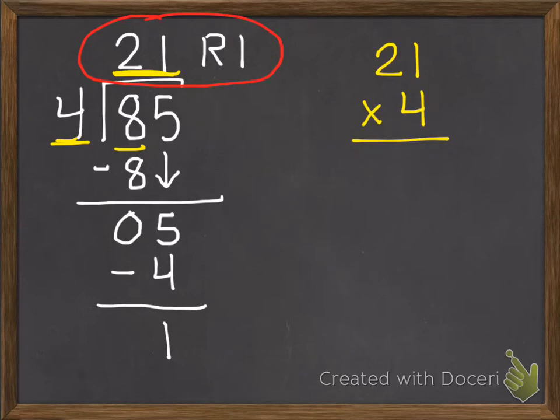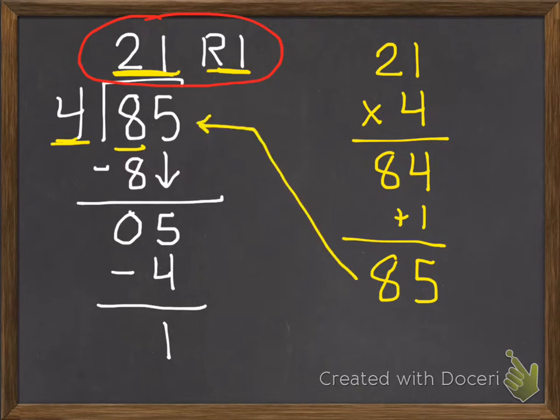4 times 1 is 4. 4 times 2 is 8. And we also have our remainder of 1, so we have to still add that back in. So 84 plus 1 equals 85, and that was our dividend. So we know we did the problem correctly.